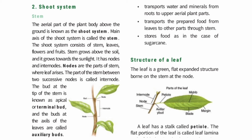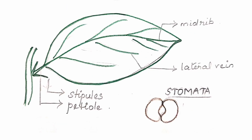The structure of a leaf: leaves are green in colour because of chlorophyll. The leaves are attached to the stem at nodes. Looking at the picture, the stalk of the leaf is called the petiole, and the flat green portion is called the lamina. The midrib runs through the centre of the lamina.